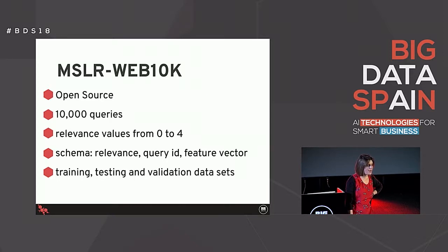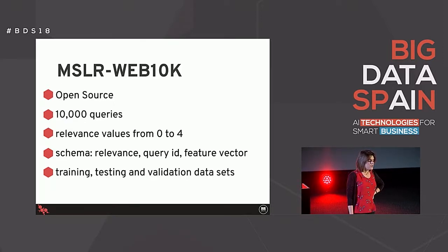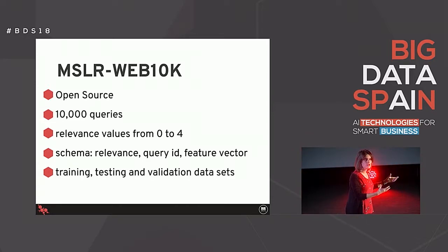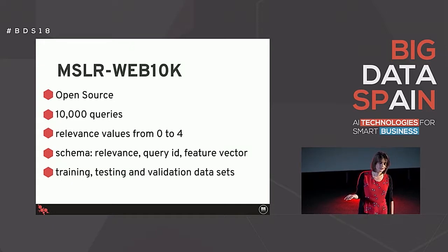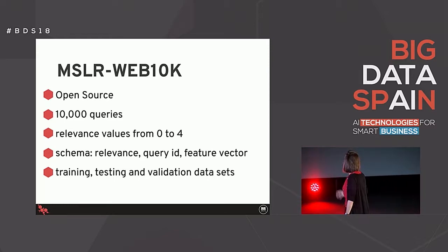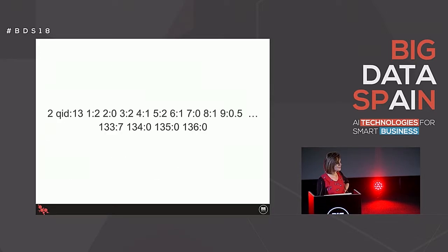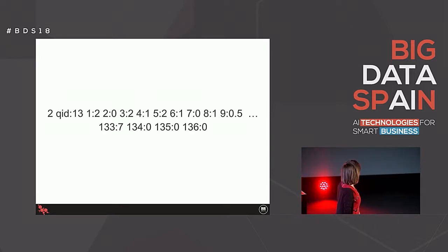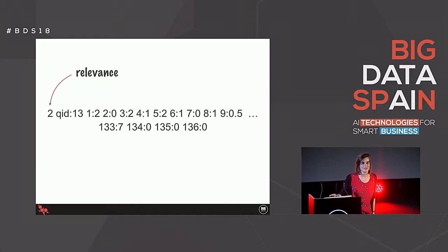The dataset I'm using is open source - it's the MSLR Web 10k dataset, curated by Microsoft for learning to rank, and it's been used in many Kaggle competitions. The data has 10,000 queries with multiple documents for each query. A human has gone through and given each document a value from 0 to 4 for the specific query - 0 means not relevant at all, and 4 means really relevant. The dataset is already split into training, testing, and validation sets, so there's not very much to do to get started. Except the data is in a slightly funky format.